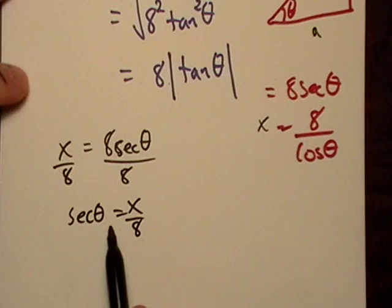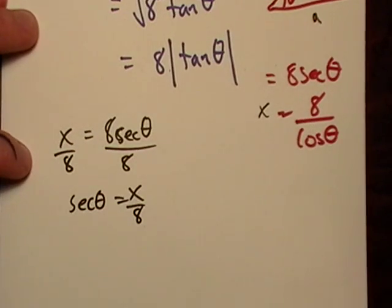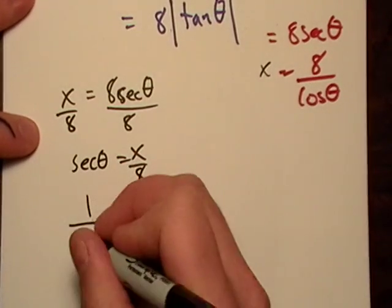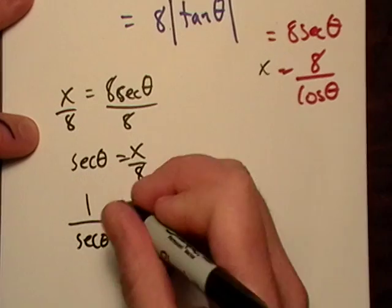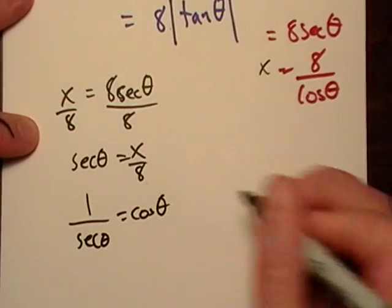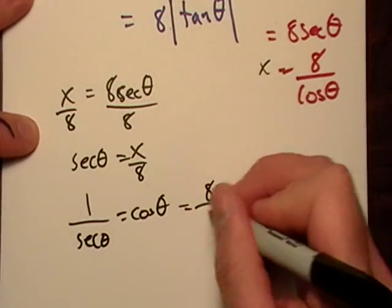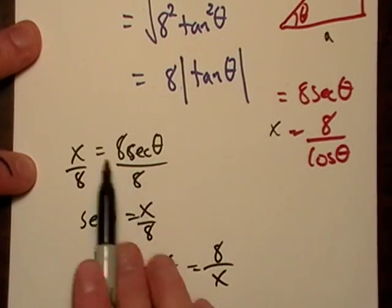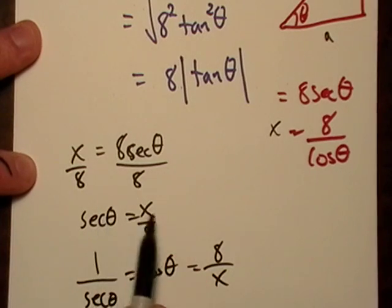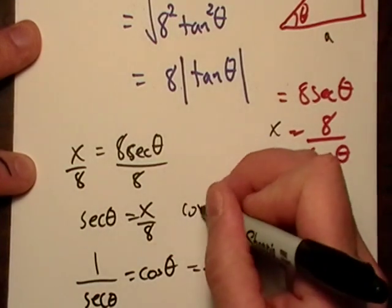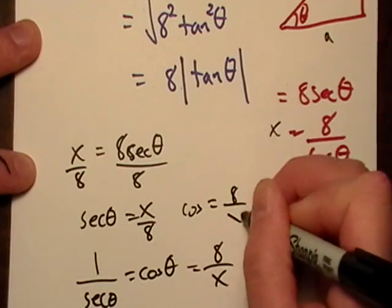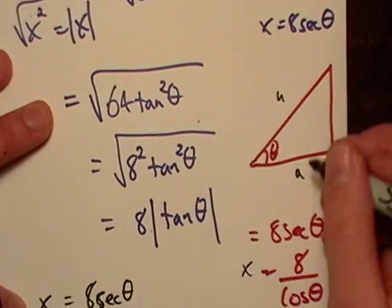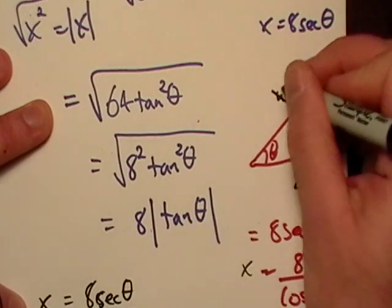Secant of theta is the same thing as 1 over cosine theta. So 1 over secant theta should equal cosine theta, which would equal 8 over x. You see how I did that? I just divided both sides by 8, and I got secant equals x over 8. So cosine has to equal 8 over x, since they're a reciprocal identity. So cosine of theta is 8 over x.